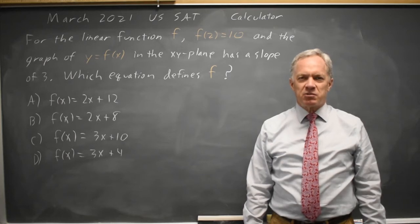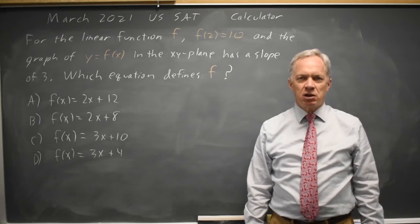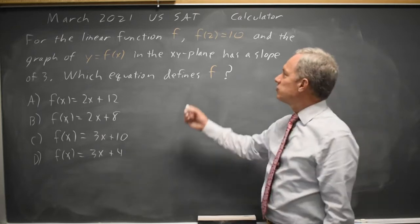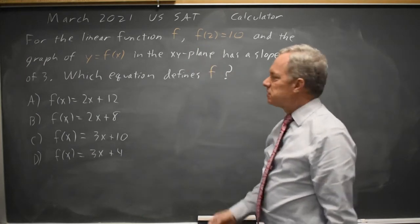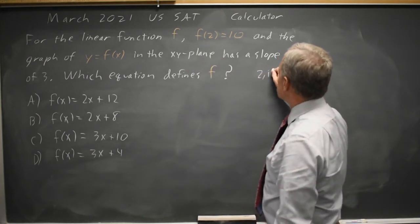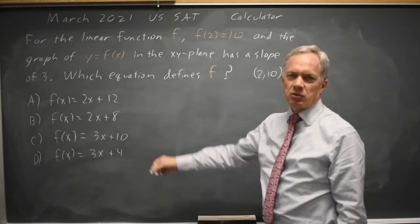I'm Dr. Roger and this question is from the March 2021 U.S. SAT calculator section. College Board describes a linear function passing through the point x equals 2, y equals 10 and with a slope of 3, and they ask which of these would be the equation.